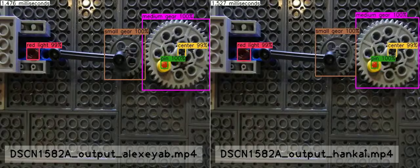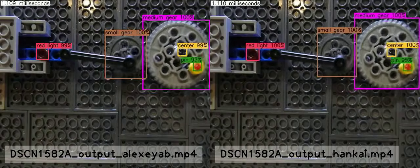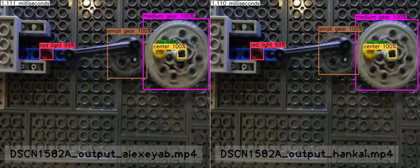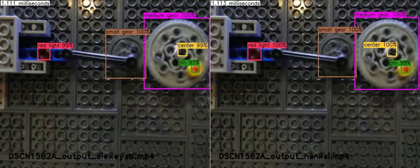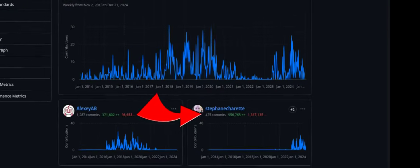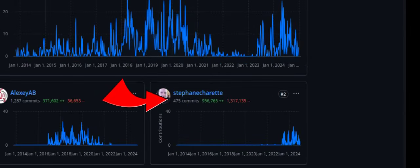The Hank AI fork of Darknet YOLO was created in May of 2023. As of late December 2024, I have pushed 475 Git commits to this fork, many of which are bug fixes.